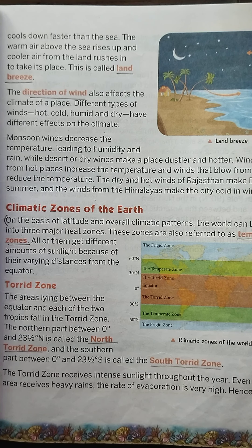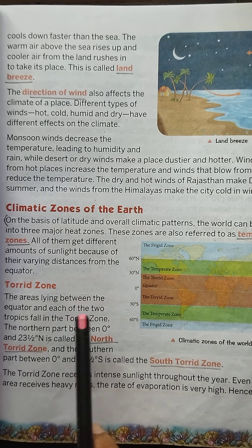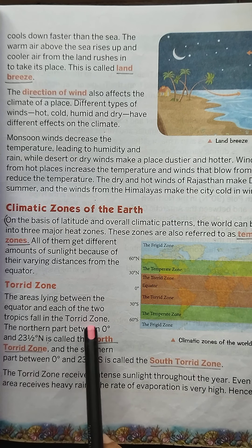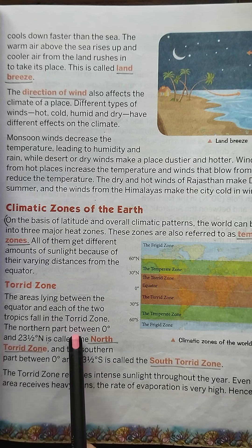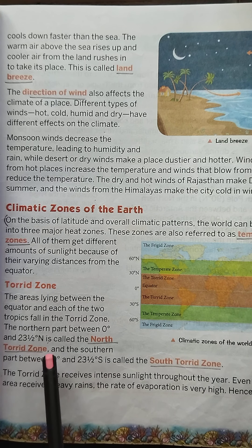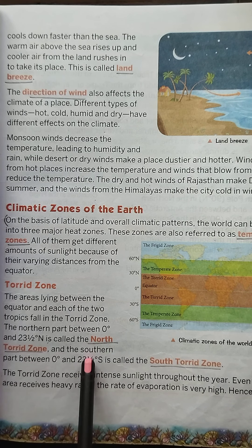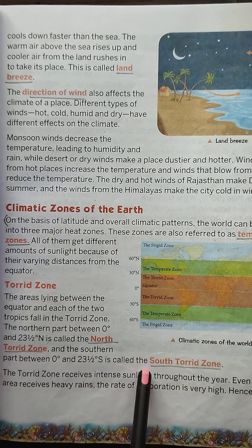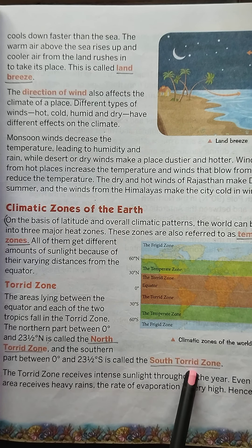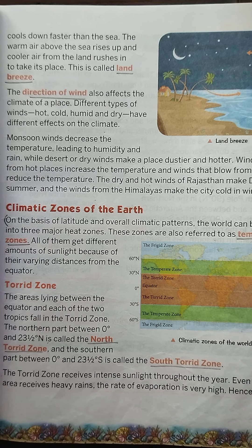Now I will discuss these three zones — torrid zone, temperate zone, and frigid zone — in detail. The areas lying between the equator and each of the two tropics fall in the torrid zone. The northern part between 0 degrees and 23.5 degrees north is called the North Torrid Zone, and the southern part between 0 degrees and 23.5 degrees south is called the South Torrid Zone.